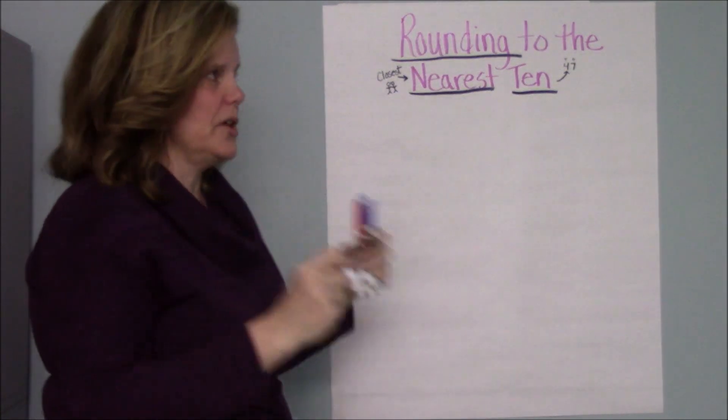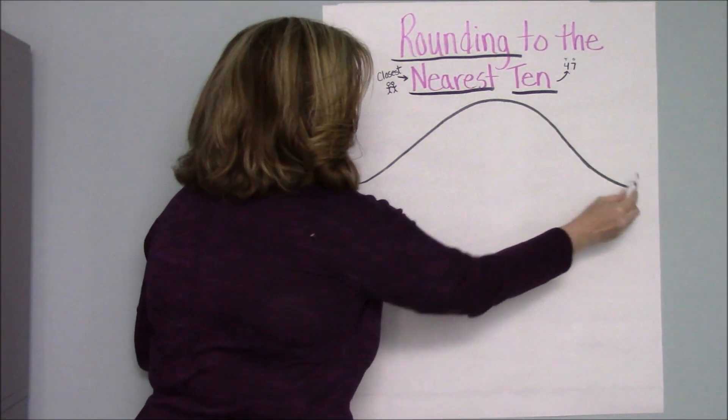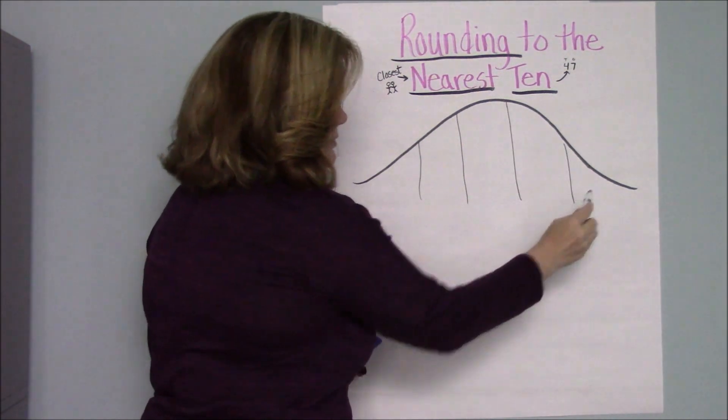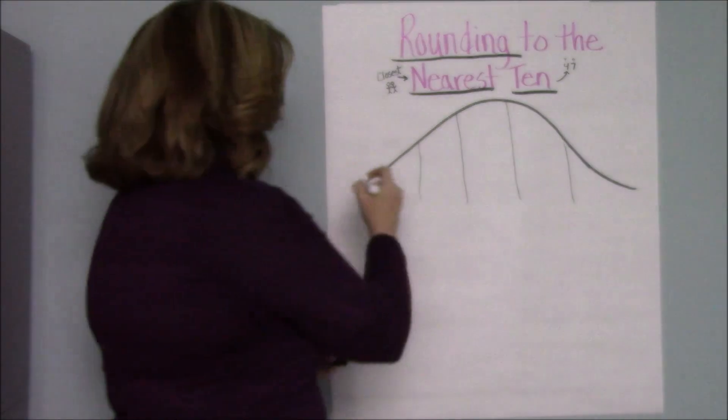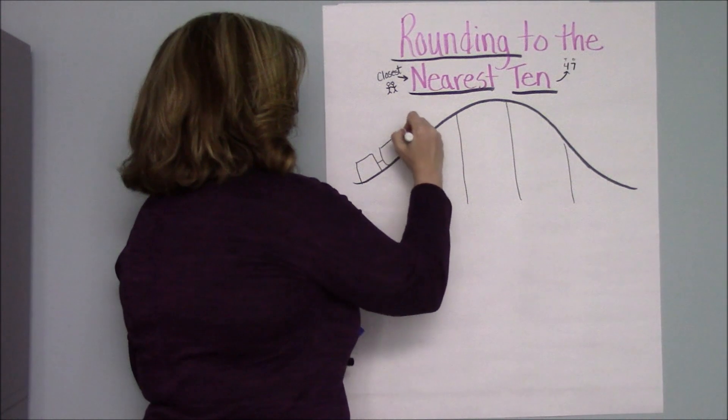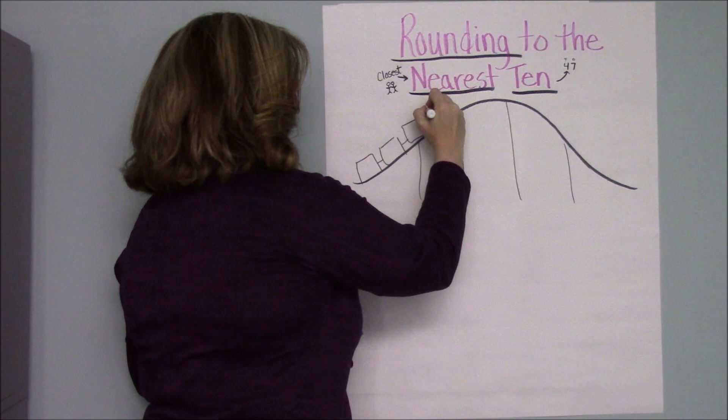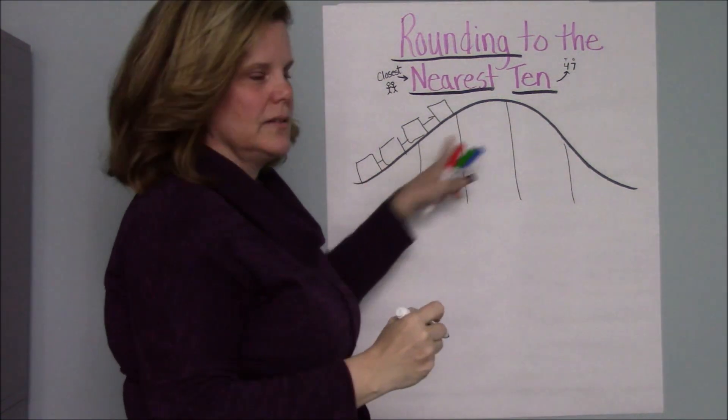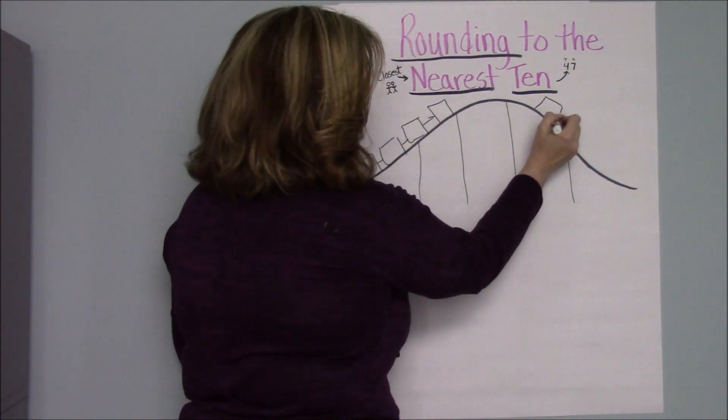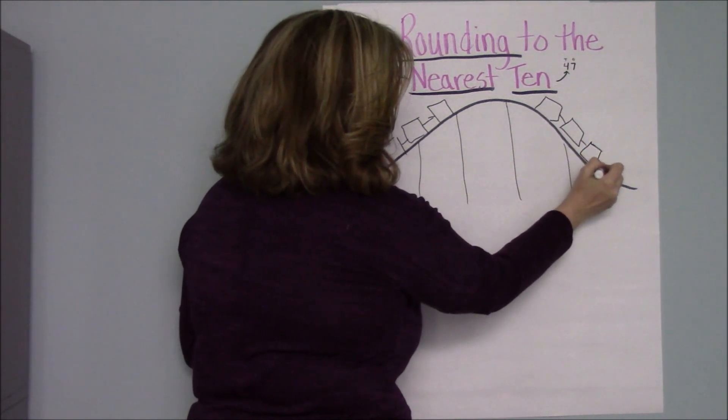Now how do we do that? So remember we talked about rounding, and we talked about it like a roller coaster here. So here's our roller coaster. These are our supports to hold up our roller coaster. And we have our carts here on our roller coaster going up the hill.